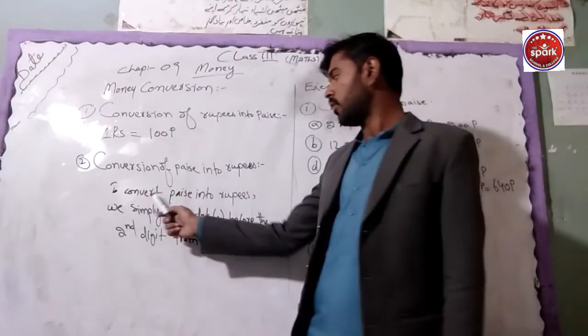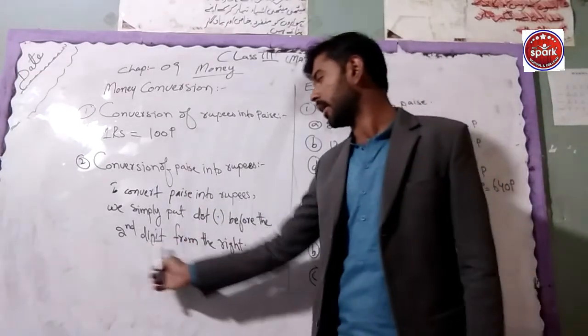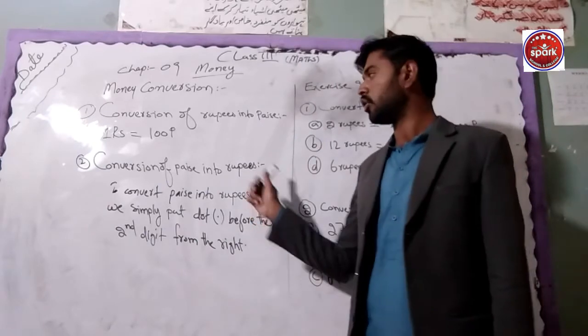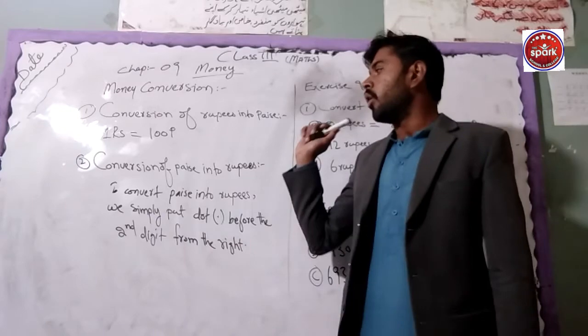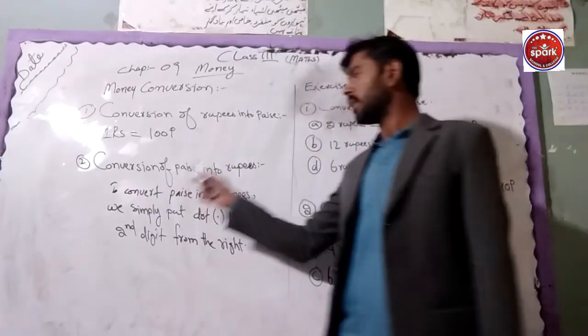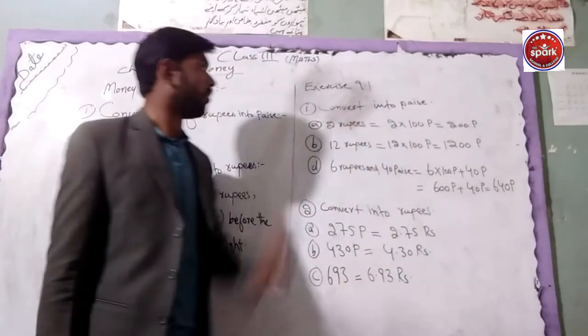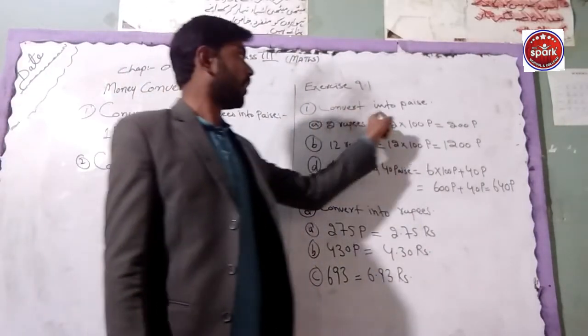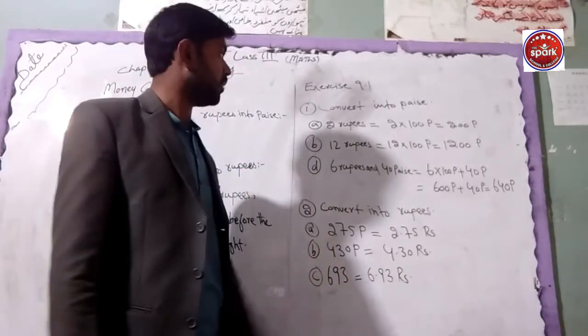To convert into paise we simply put a decimal before the second digit from the right. We have two digits and we have a decimal. We have to convert into rupees into paise.